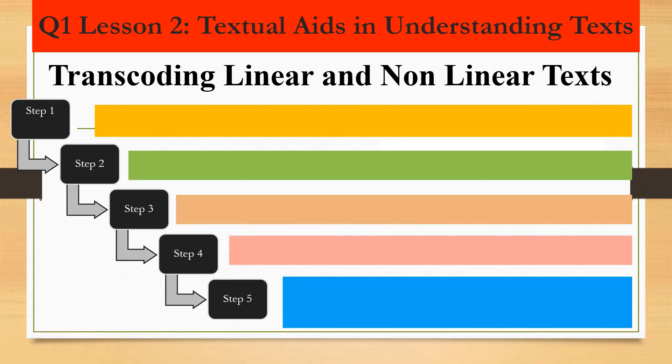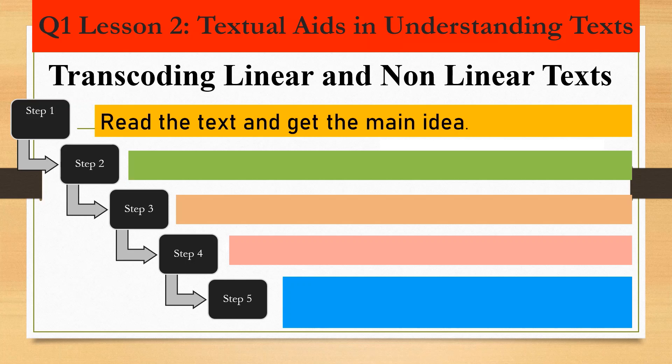Transcoding linear to nonlinear text follows five steps. Step one: read the text and get the main idea. Comprehension is indeed necessary in this part. No matter how much knowledge you have about the different examples of textual aids, transcoding them from linear to nonlinear will be very difficult if you did not understand the text that you read.